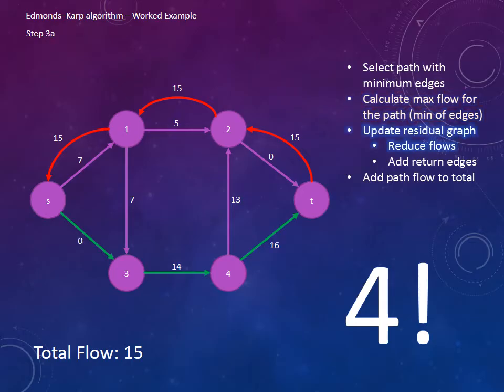Now we update the residual graph by reducing the flows by 4 and then add return edges for 4 back along the same path. Now as we have allocated 4 to flow from the source to the sink, we can increase the total flow by 4.